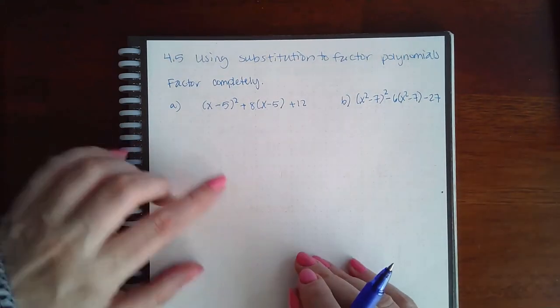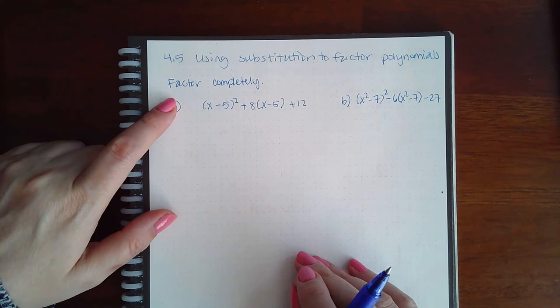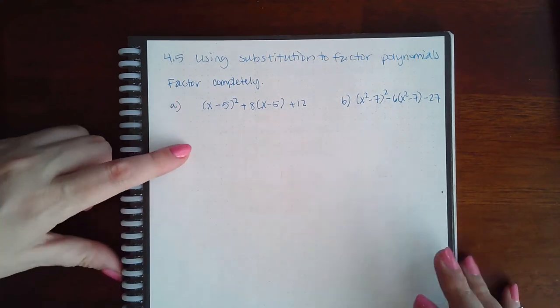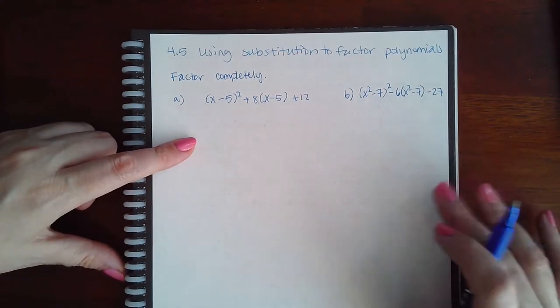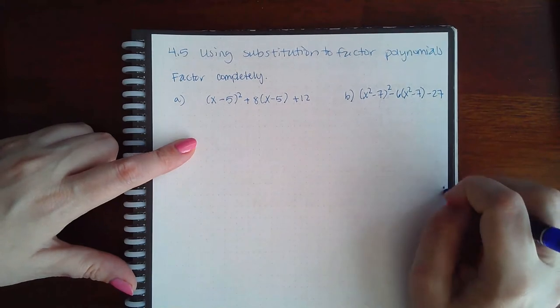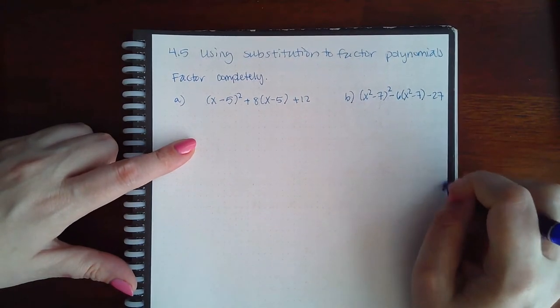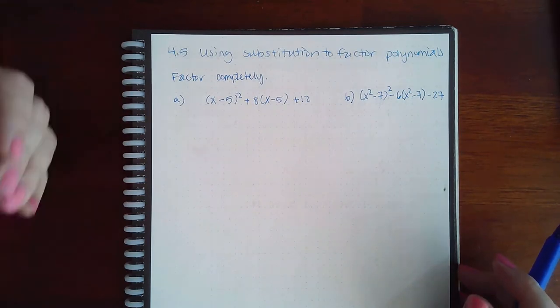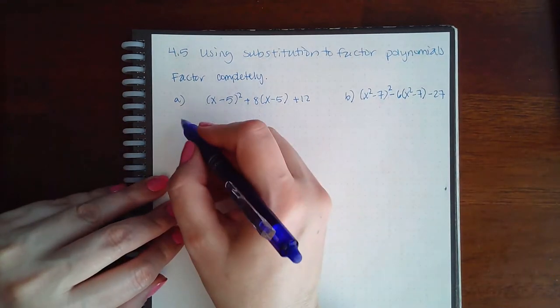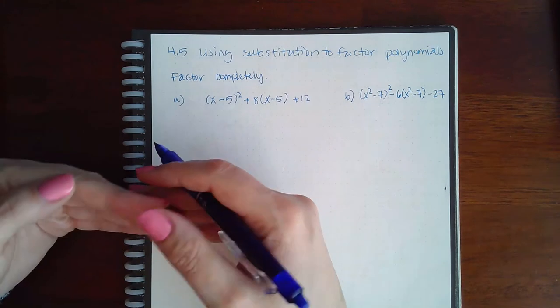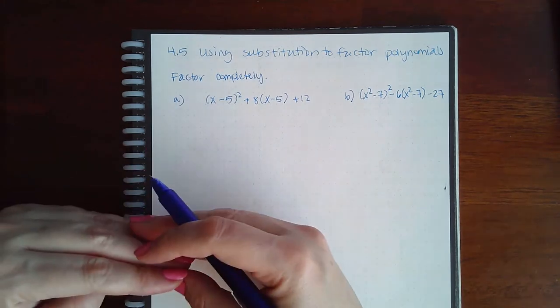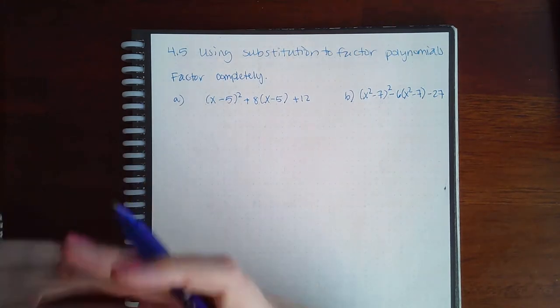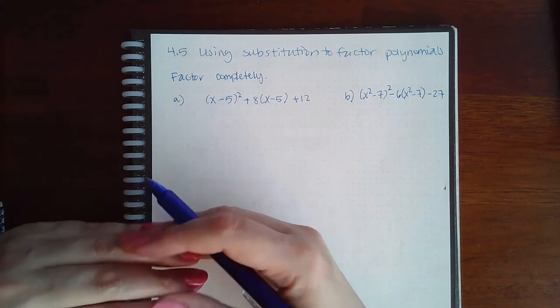So here we have 4.5: Using Substitution to Factor Polynomials. What is happening here is that what is being squared isn't just a variable, it's an expression that's being squared. So in this case you would use substitution to turn it into something that you're used to, factor that, and then back sub later.